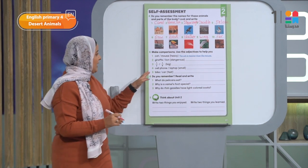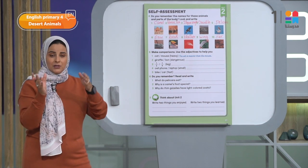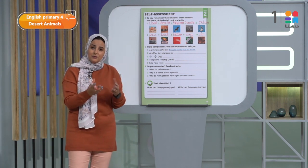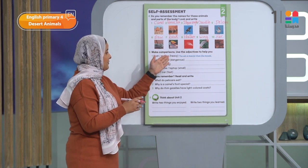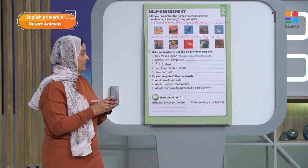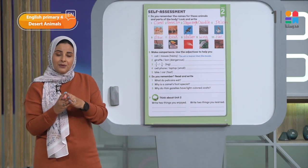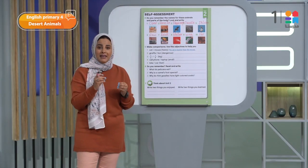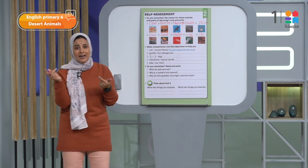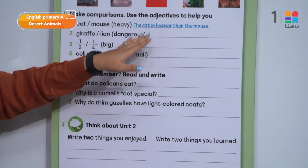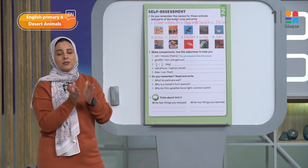Let's look at number one: we have cat, mouse, and the adjective heavy — يعني تقيل. The cat is heavier than the mouse. قلنا المرة اللي فاتت على letter Y وletter E — لما اجي اعمل الcomparative form، Y و E are not good friends، so I have to change the Y into I before adding ER. ده اللي حصل في كلمة 'heavier' — شلنا الـY، حولناها I، بعدين حطينا الـER.